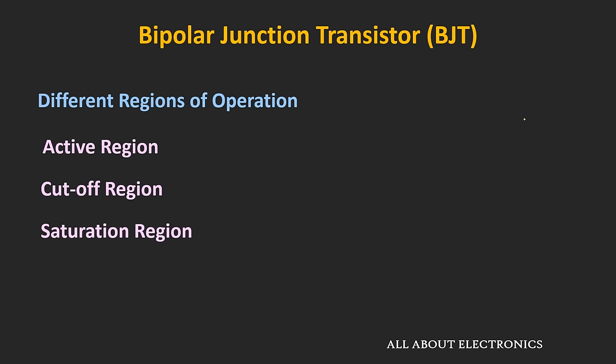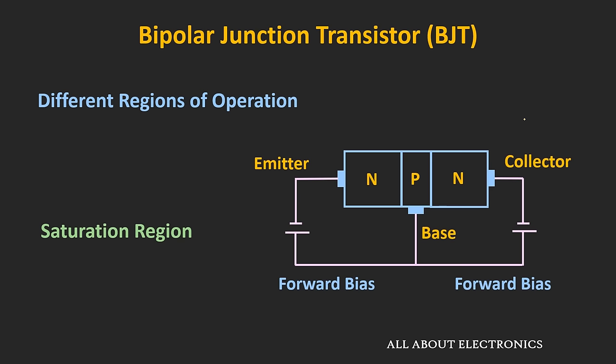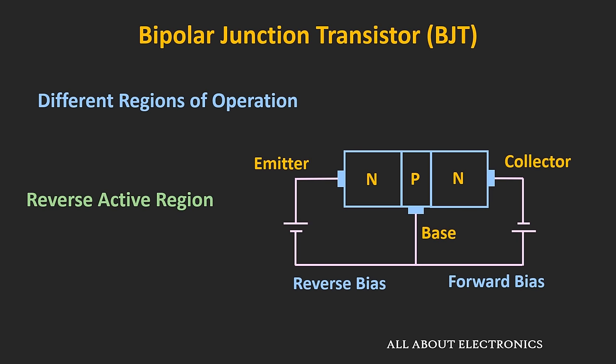In the saturation region of operation, both the base-emitter and the base-collector junctions of the BJT are forward biased. That means the base voltage VB is greater than emitter voltage and at the same time, the base voltage is also greater than collector voltage. There is one more region known as the reverse active region, where the base-collector junction is forward biased and the base-emitter junction is reverse biased. However, in this region the gain provided by the BJT is very low, so this region is usually avoided.